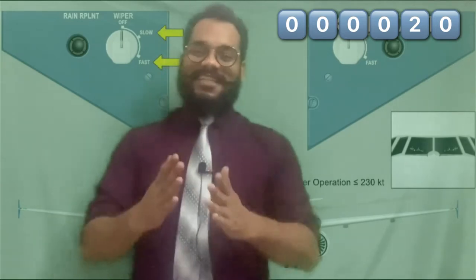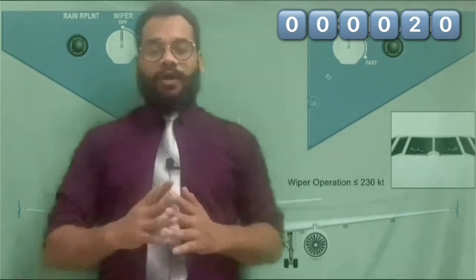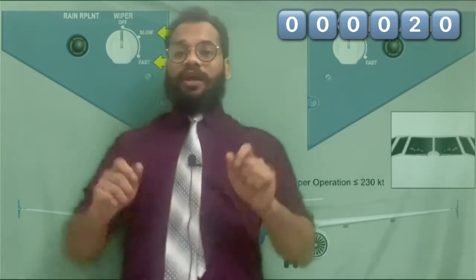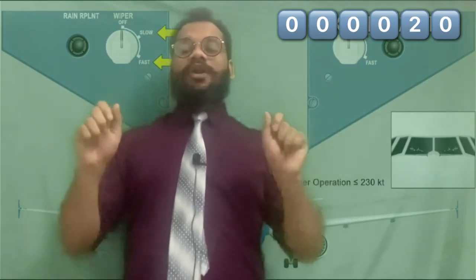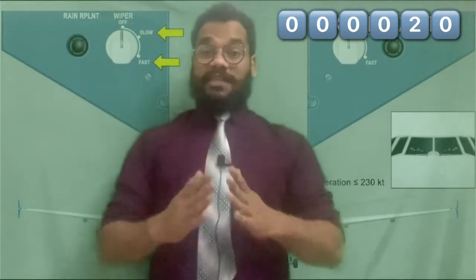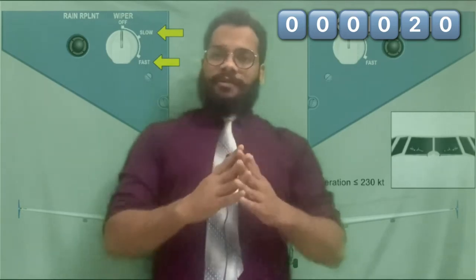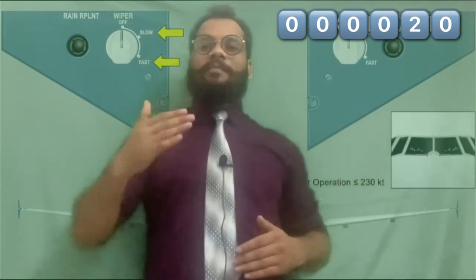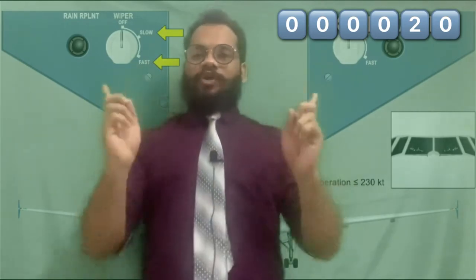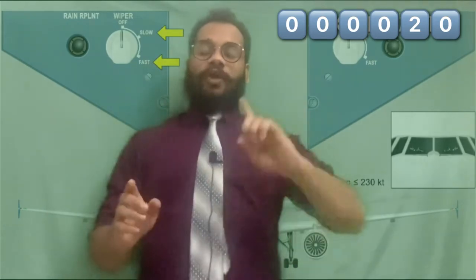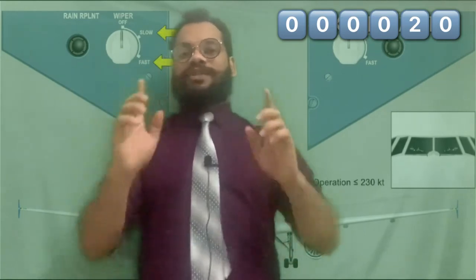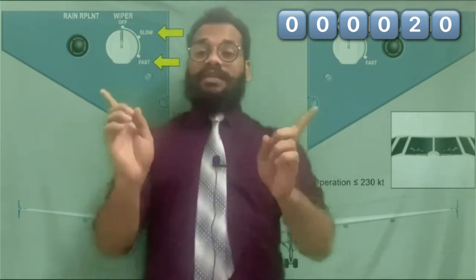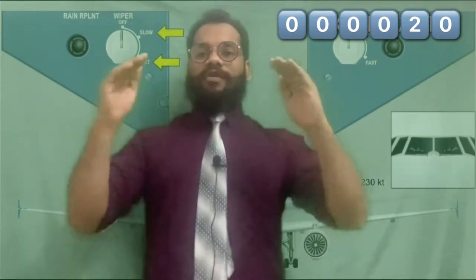Next, let's discuss how to operate the wipers. To operate the wiper, there are rotary control knobs on the overhead panel. Let me take the example of Airbus 320. On the front windshields, which are made of plexiglass, there are two wipers: one on the captain side and the other on the first officer side.